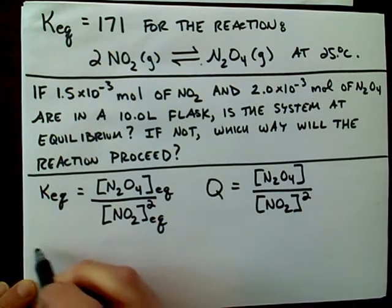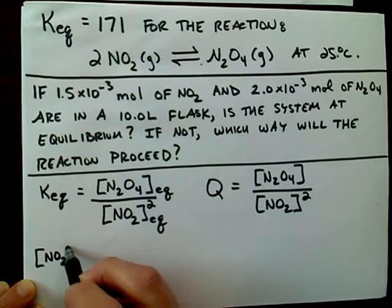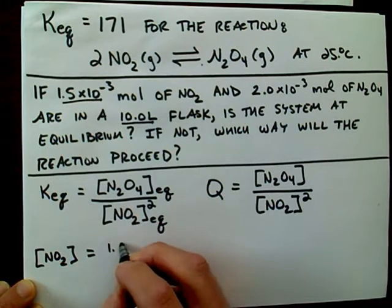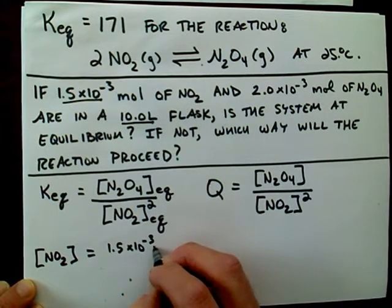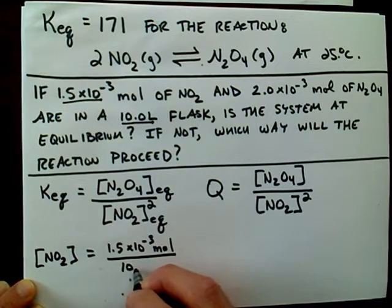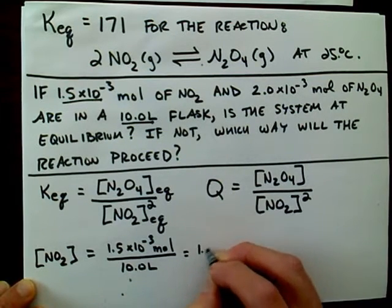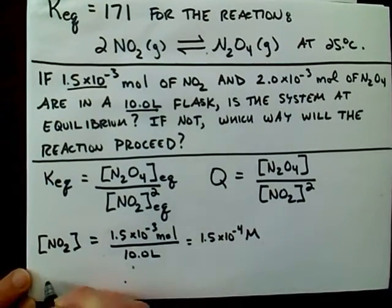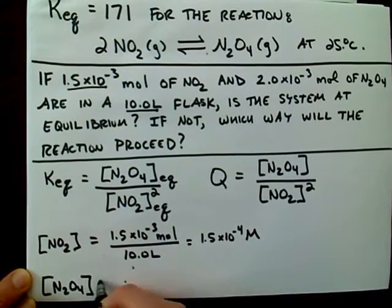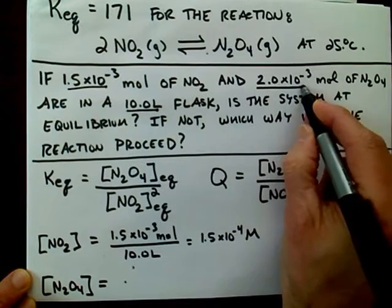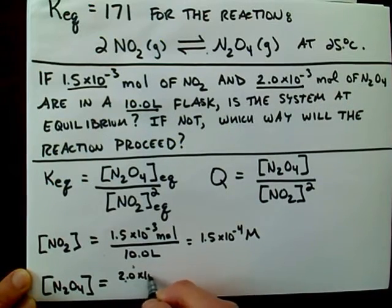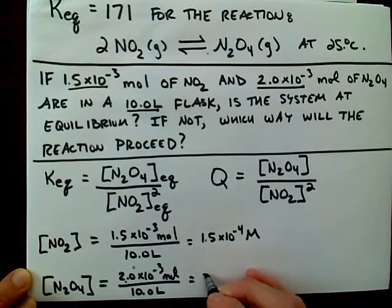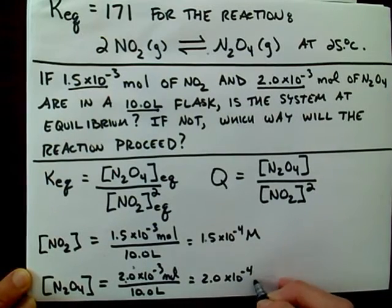The concentration of NO₂ is moles of NO₂ per liter: 1.5 × 10⁻³ moles divided by 10 liters, which gives 1.5 × 10⁻⁴ molar. The concentration of N₂O₄ is 2 × 10⁻³ moles divided by 10 liters, which gives 2 × 10⁻⁴ molar.